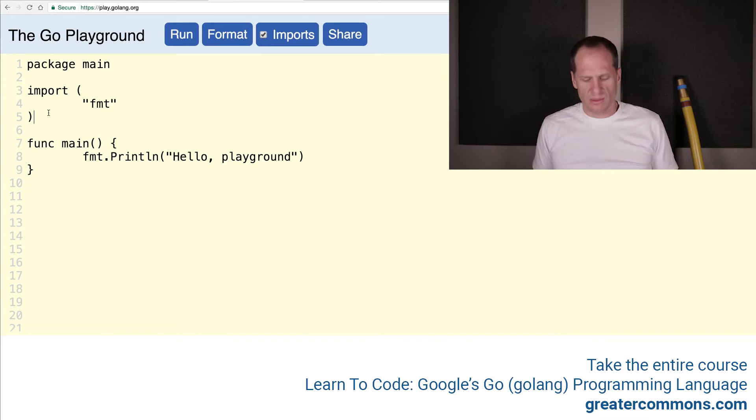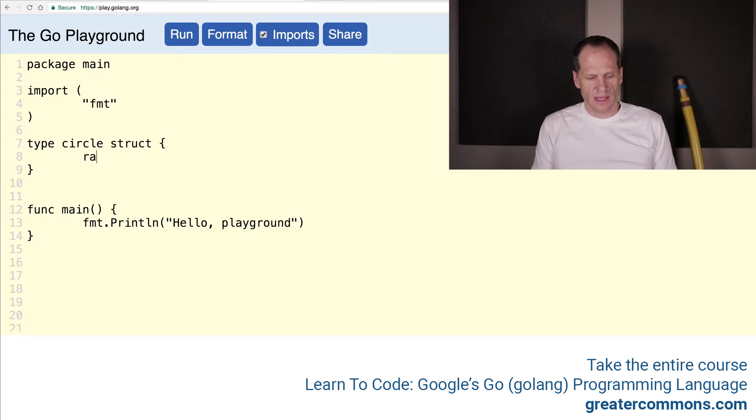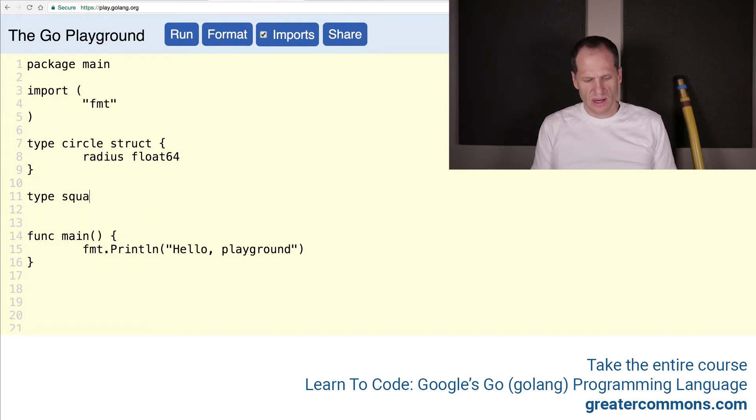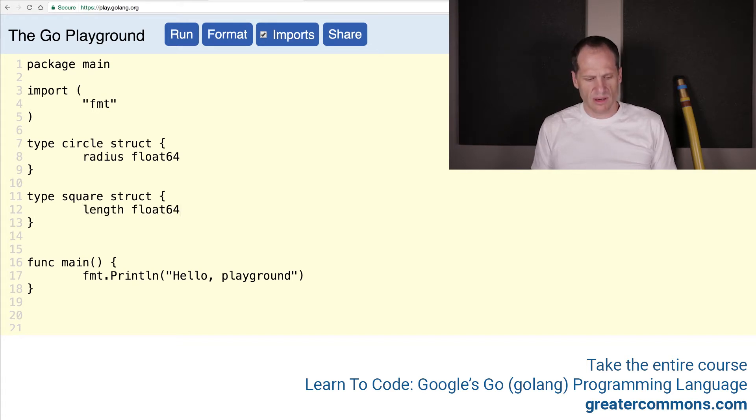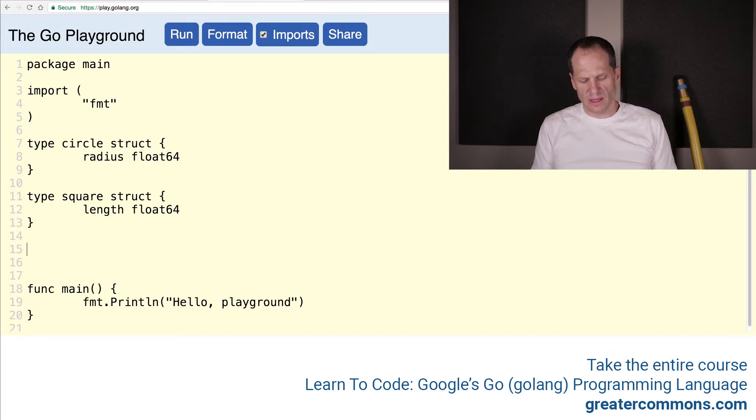So we're going to go to the Golang playground and we're going to create a type circle struct. And that's going to be, we need a radius. Radius, which will be a float 64. And then we'll do type square struct. And we need a length, which will be a float 64. And then we need some func methods here.